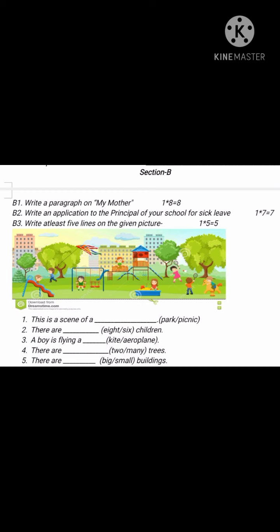The first question is a paragraph on my mother. It is of 8 marks. You need to write at least 8 to 10 sentences — not more than that, not less than that — so that you will get 8 marks. So, how do you have to write the paragraph on my mother?